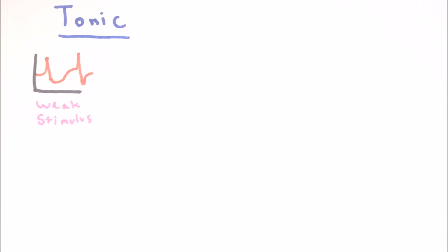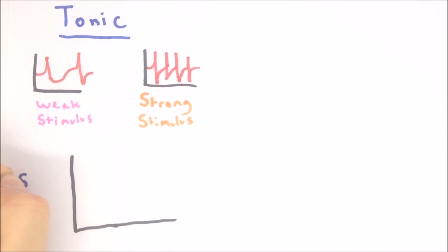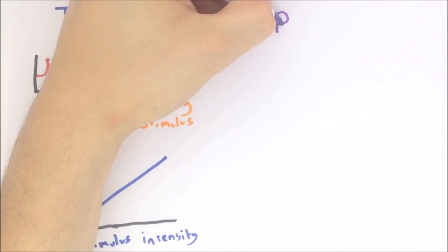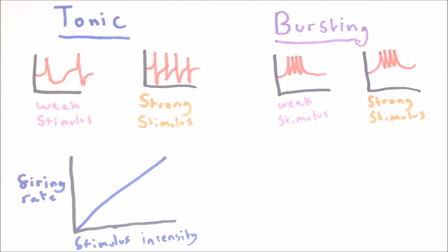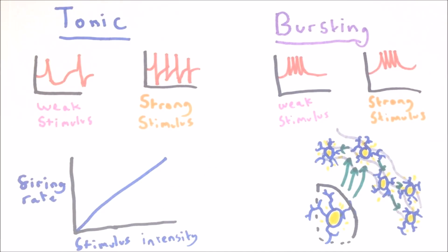But what is the purpose of having two modes of firing and why switch between them? When firing in tonic mode, the firing rate of the neuron changes linearly with the strength of the input — the stronger the input, the greater the firing rate — meaning thalamic neurons are able to relay information accurately. However, in bursting mode this linear relationship is lost, as a stimulus of any strength will elicit a similar burst of firing. Nevertheless, a rapid burst of action potentials means cortical neurons receive a lot of input in a short space of time, making bursts very effective at stimulating cortical neurons. So although bursts convey information less accurately, they send a strong message and are effective at activating the cortex.